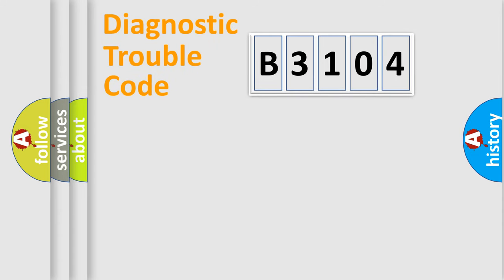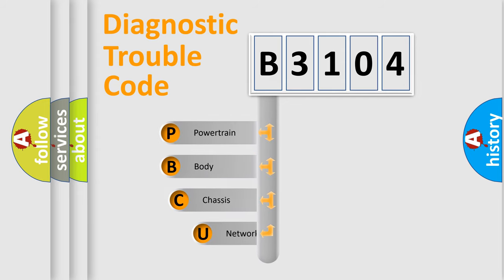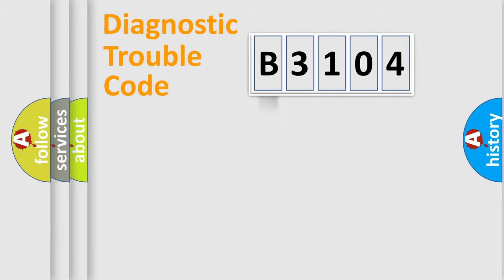Let's look at the history of diagnostic fault code composition according to the OBD2 protocol, which is unified for all automakers since 2000. We divide the electric system of an automobile into four basic units: Powertrain, Body, Chassis, and Network.